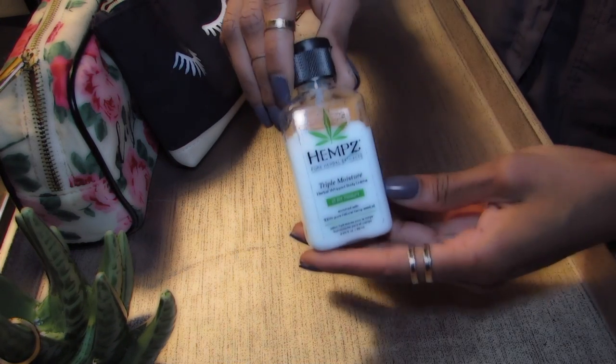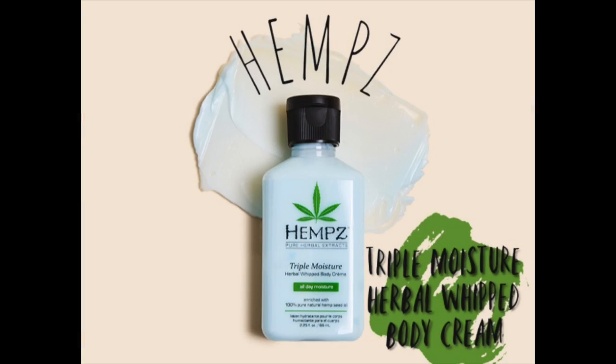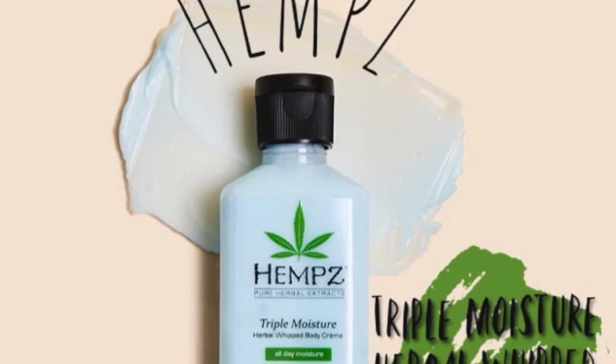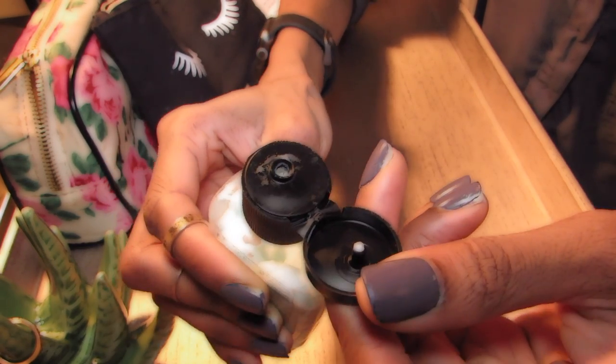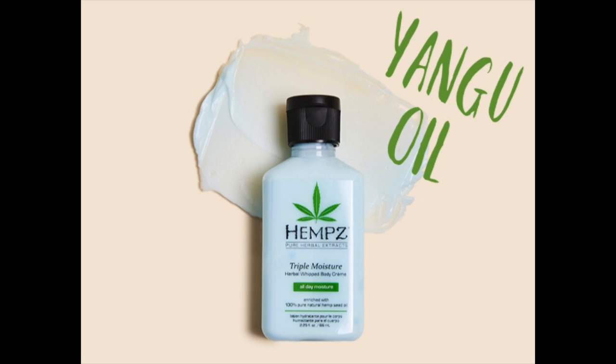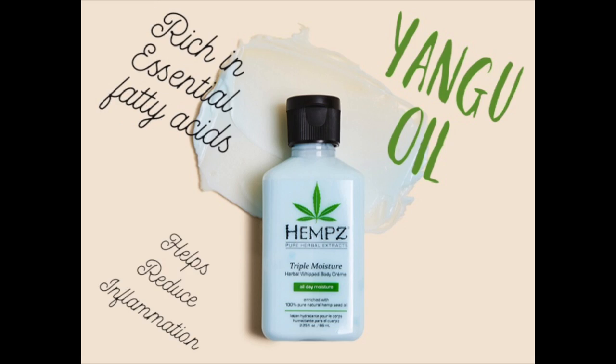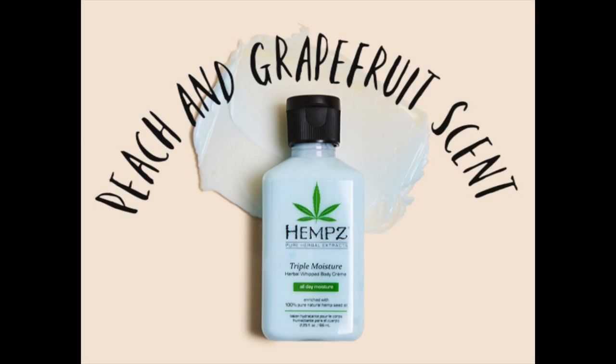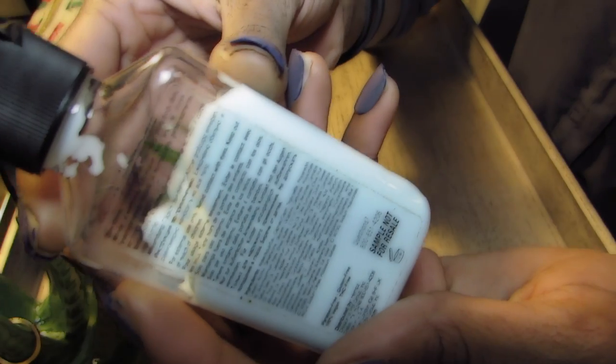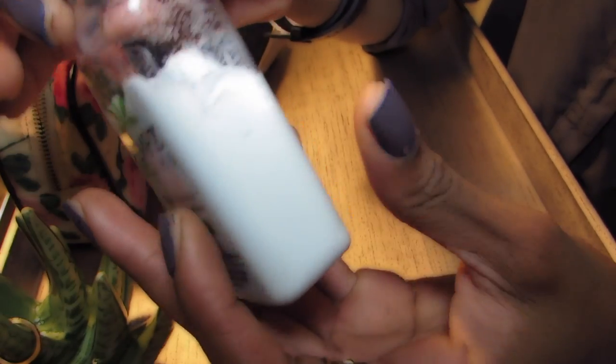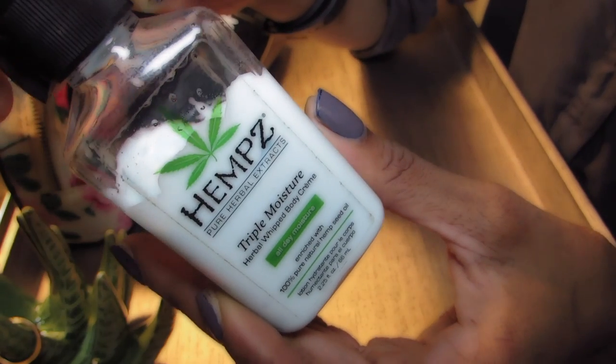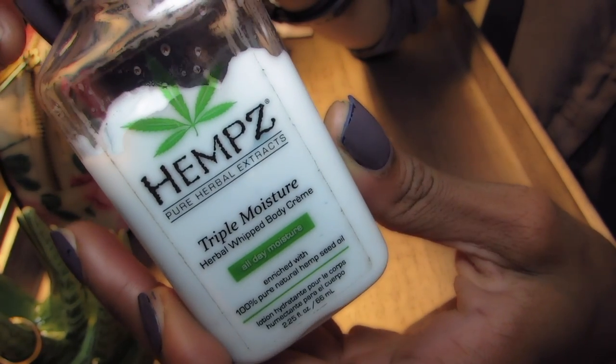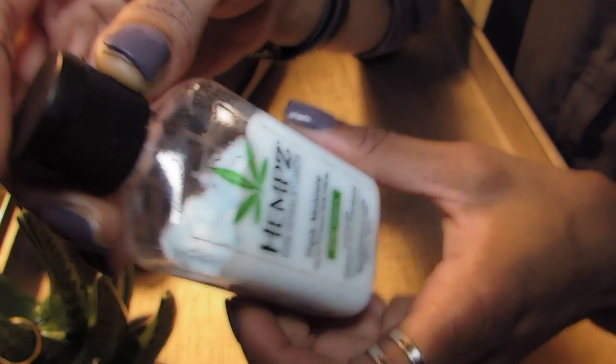The first item I was so excited for is Hempz Triple Moisture Herbal Whipped Body Cream. It's lightweight but still a body cream, so it moisturizes deep. It contains apple fruit extract loaded with vitamin C to give your skin a glow. It smells fresh. It also contains yangu oil, which is rich in essential fatty acids and helps reduce inflammation. It's peach and grapefruit fragranced and light and refreshing. That's what was so interesting to me about this product. It's actually almost gone.